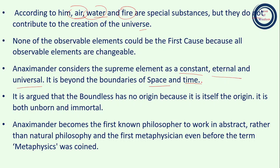It is beyond the boundaries of space and time. Because it is infinite, it is not limited by any space nor bounded by any time — it is free from these boundaries. It is argued that the boundless has no origin because it is itself the origin. It is both unborn and immortal. This is important: if something originates or is born, it will one day die or be destroyed. If we say the infinite is born, we must also accept its destruction, which is not acceptable according to Anaximander. The boundless is unborn and therefore immortal.